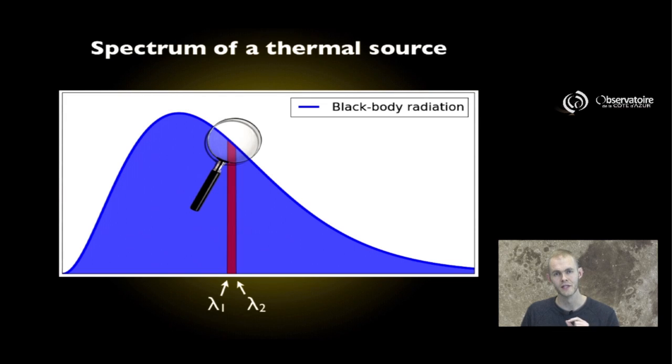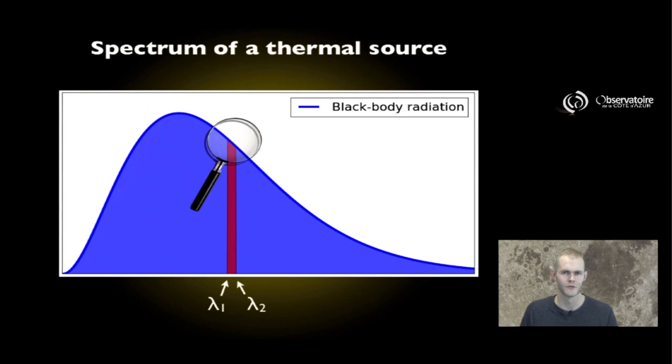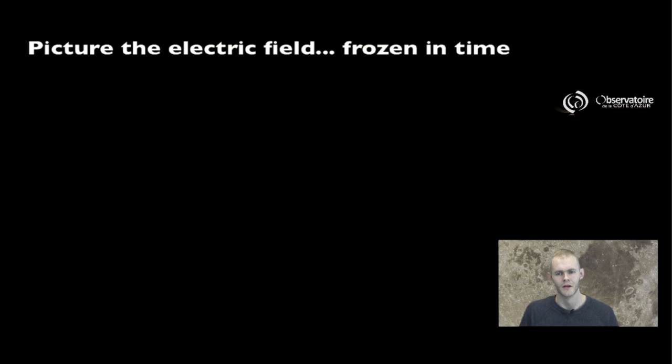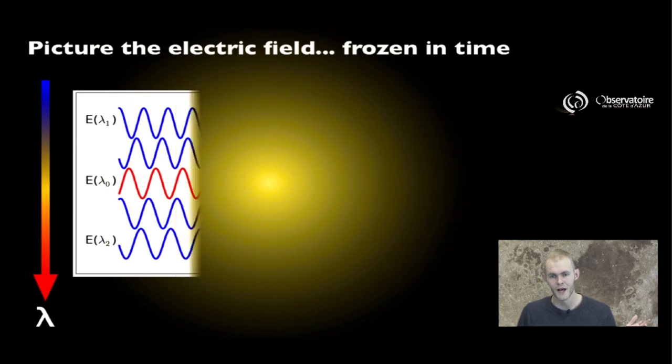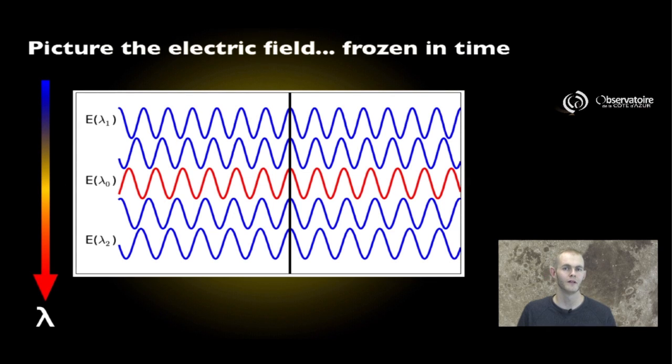And if we look in detail at what the emission of that object would look like in this very narrow regime, we can go as far as even imagining being able to describe the electric field that emanates from the object, which is what we're going to do right now. So we have the electric field being a solution of Maxwell's equation at different wavelengths that cover the bandpass we've just isolated in our previous plot.